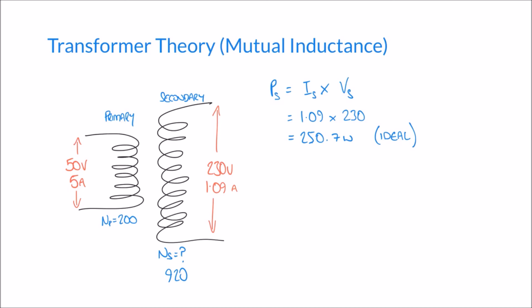For our ideal transformer, despite a little rounding, we get the same power on the secondary as on the primary input. The primary voltage multiplied by the primary current is 50 times 5, giving 250 watts input — essentially the same as the 250.7 watts on the output. So no power has been lost in transferring energy from primary to secondary.